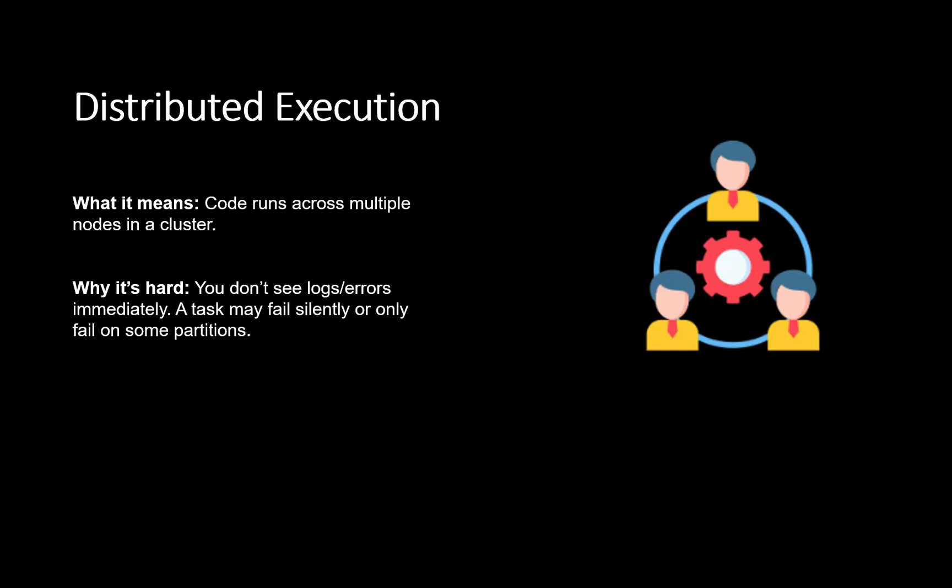Another important challenge is that Spark operates on a distributed architecture. Since we are dealing with huge amounts of data spread across many nodes, it's not one single machine you can just go and debug locally. It is hard to see logs and errors immediately and figure out which task exactly is failing. Within a task, there may be one particular data partition that is failing, making it difficult to get to the right node, the right task, and the right data partition where the error is actually happening.